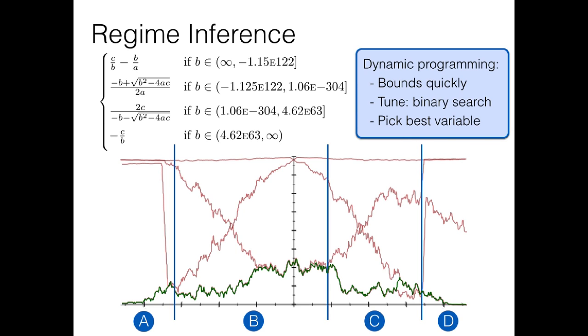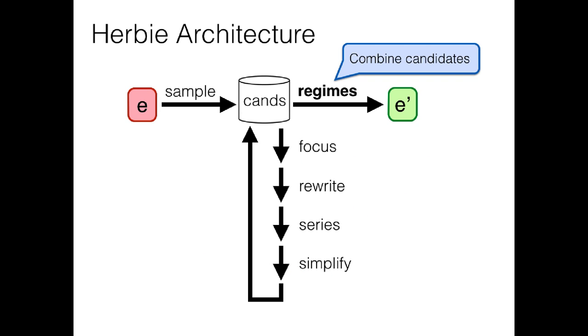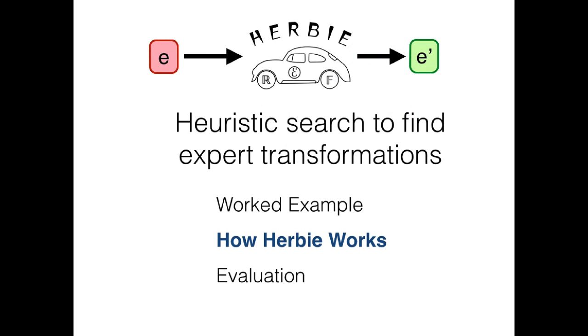So by the end of this regime inference pass, we've identified the regions and the formulas we want to evaluate in each of them, giving us the quadratic formula that we wanted. So that's basically how Herbie works. And now I want to give you the experiments we've done to demonstrate that Herbie actually works on both textbook and real world code, and is pretty successful at improving accuracy.